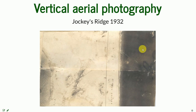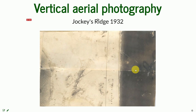Here we have an example from really old UAS imagery at Jockey's Ridge in North Carolina. As you can see, this is the shoreline, and the image is taken from above — not tilted, or only so slightly tilted that it is not recognizable to the human eye without measurements. This is what a vertical aerial photograph looks like.